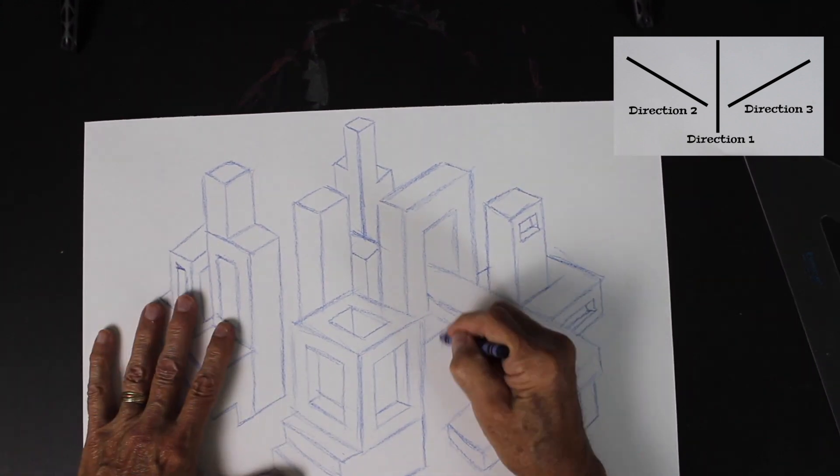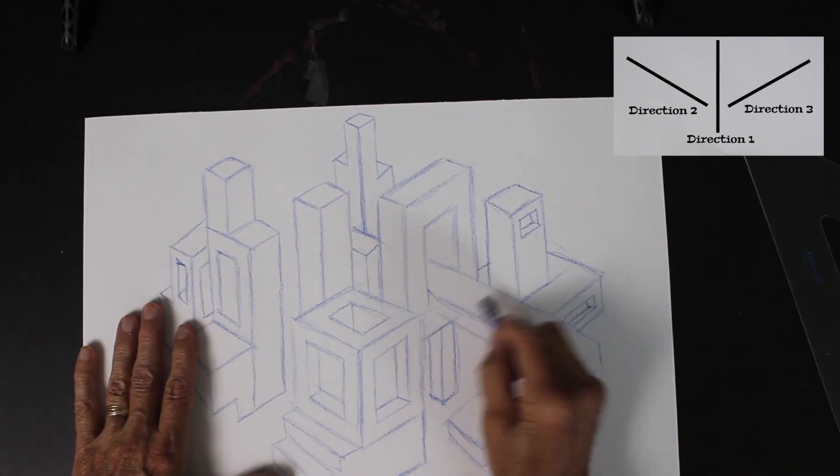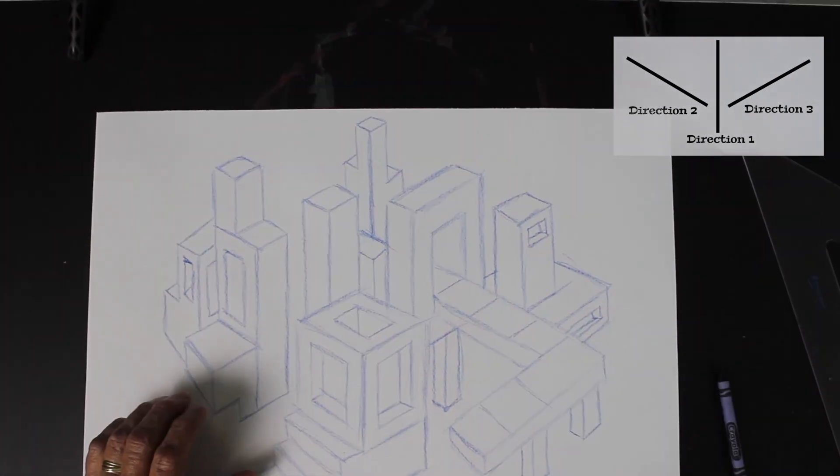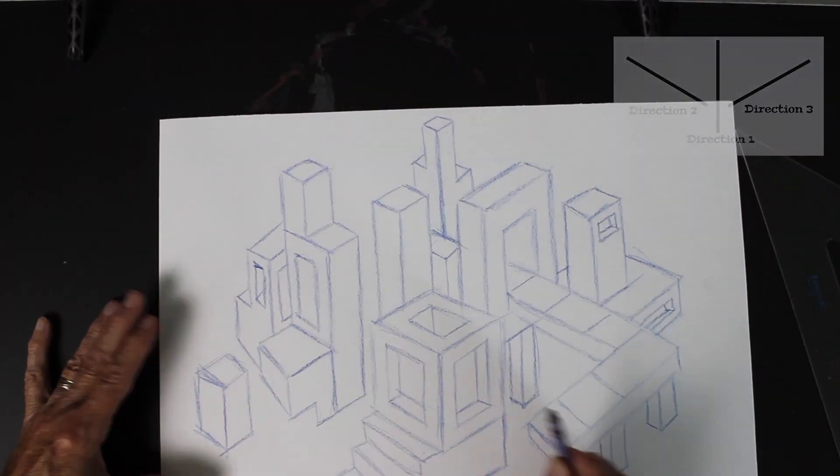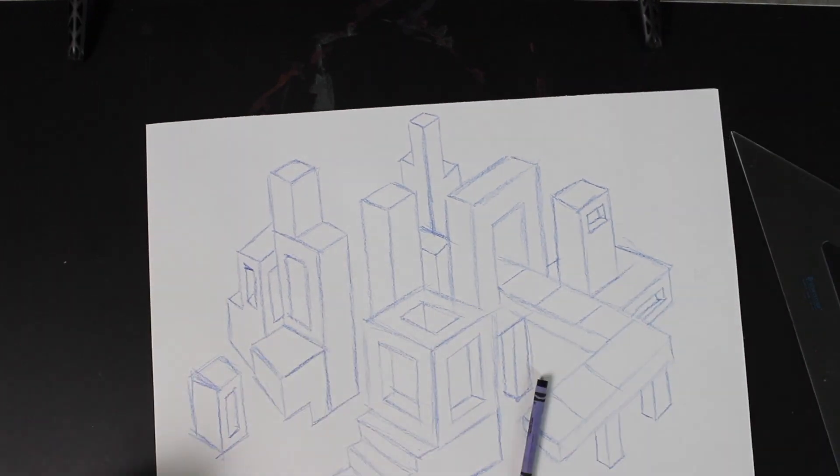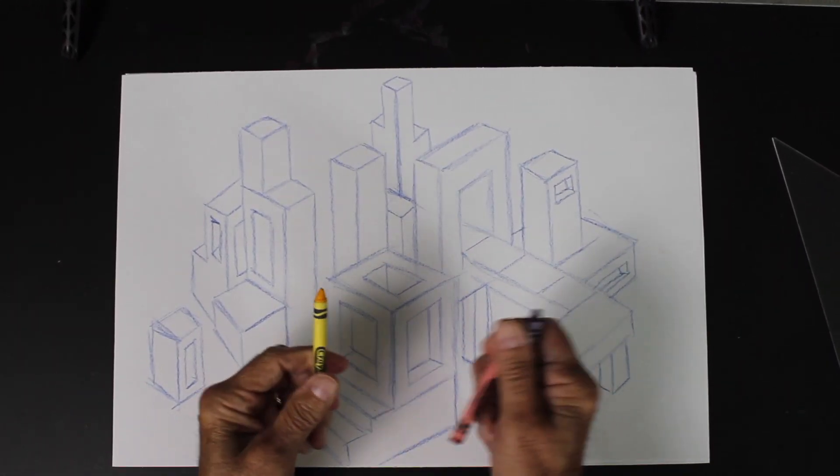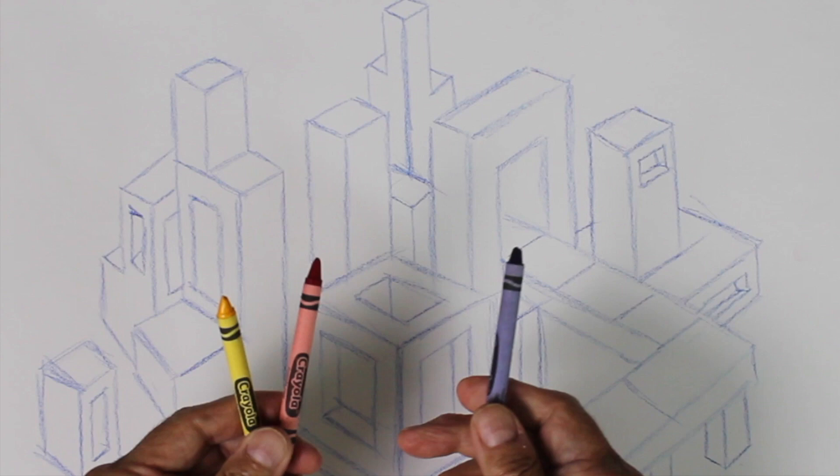And here we go drawing at a fast speed, of course, and finishing up. Let me put one more little thing. Oops, a little blooper there. Sorry about that. We'll fix that later. And so now we'll talk about another concept called directional color.